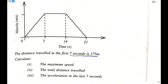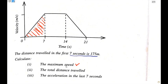Let me shade the same area. This is the area we are considering as the distance in the first 7 seconds. Question 1: calculate the maximum speed. For question 1, they want you to find the maximum speed.